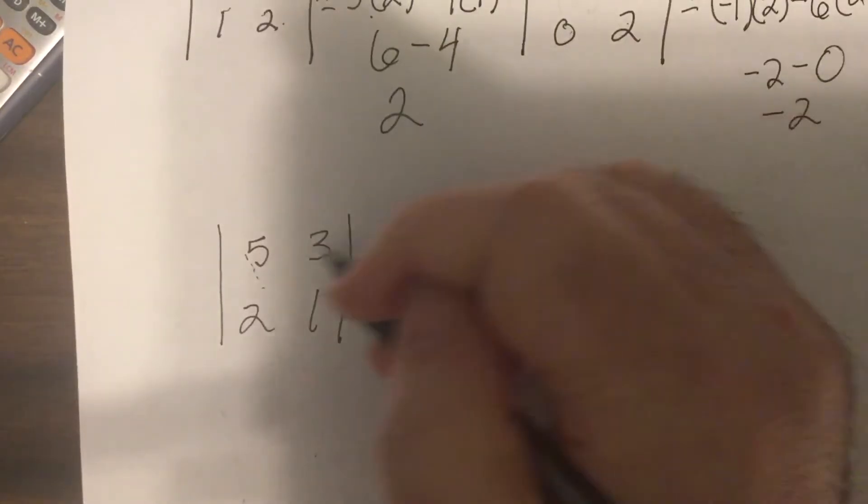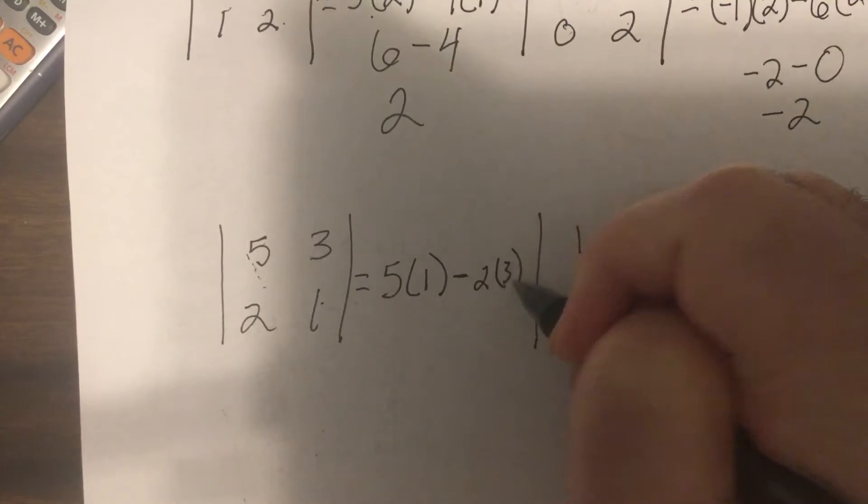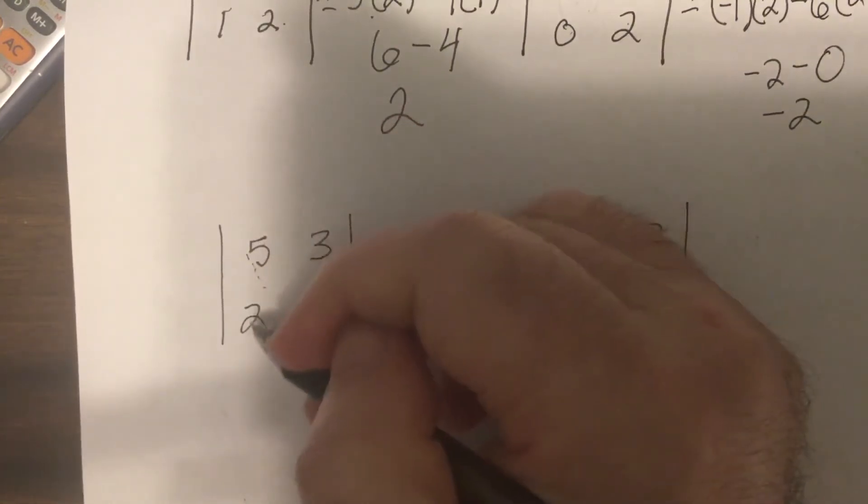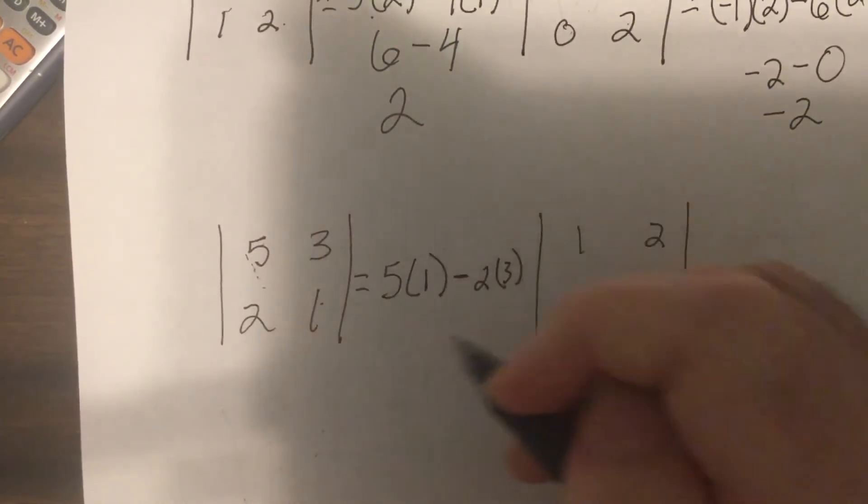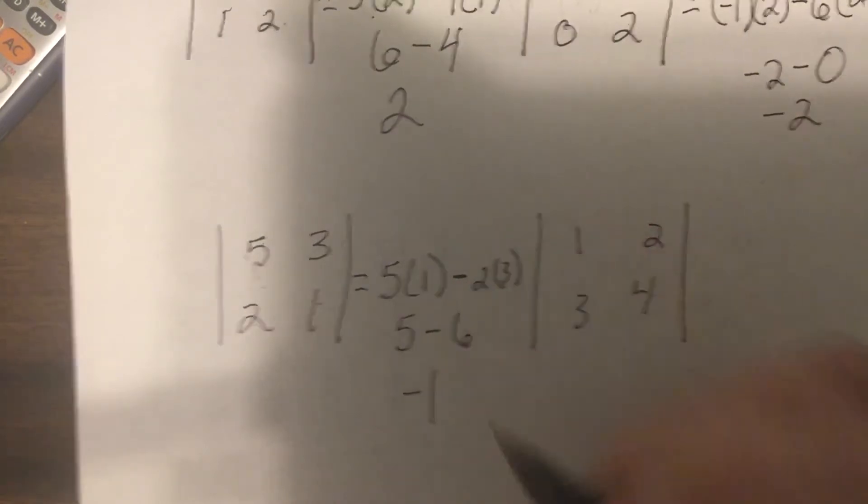So the determinant, 5 times 1, minus 2 times 3. So that would be 5 minus 6, which is negative 1.